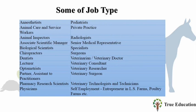Some Job Types: Anesthetics, Animal Care and Service Workers, Animal Inspectors, Associate Scientific Manager, Biological Scientist, Zoo Practice, Dentist, Lecturer, Optometrist, Practitioners, Pharmacy Research Scientist, Physicians, Podiatrist, Private Practice, Radiologist, Senior Medical Representative, Specialist, Surgeons, Veterinarian and Veterinary Doctor, Veterinary Consultant, Veterinary Researcher, Veterinary Surgeon, Veterinary Technologist and Technicians. Self-Employment: Entrepreneur in Livestock Farms, Poultry Farms, etc.